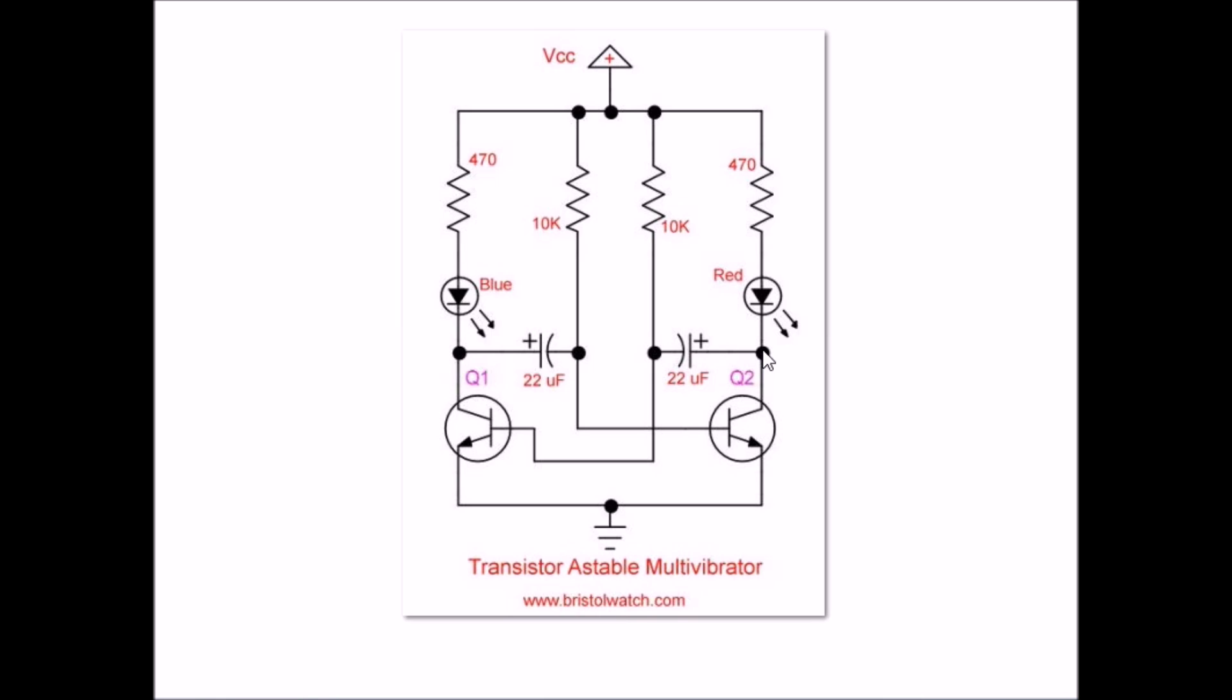The frequency of the output, and you have two of them actually, is determined by the RC values. There's a formula on the web page on how that works.